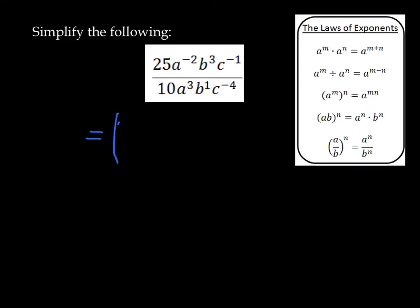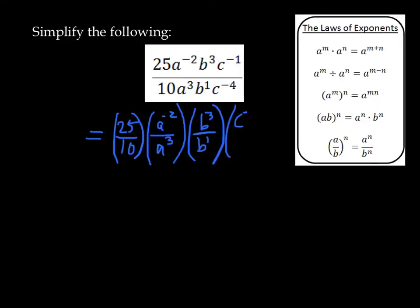We're going to do this one little piece at a time. We're going to notice that there's really just 25 over 10 when it comes to the coefficients. There's a to the power of negative 2 over a to the power of 3. There's b to the power of 3 over b to the power of 1. And there's c to the power of negative 1 over c to the power of negative 4. Each of these mini fractions can be dealt with separately.